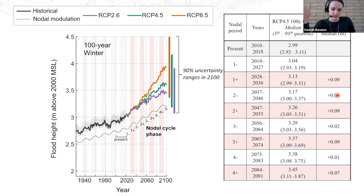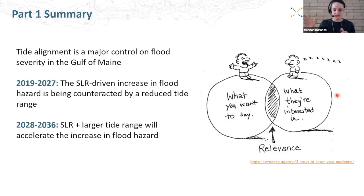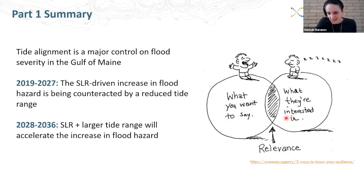To summarize: tidal alignment is a major control on flood severity in the Gulf of Maine. From 2019 to 2027 we're in the negative phase of the nodal cycle and the increase in flood hazard is being counteracted by a reduced tide range, but towards the end of this decade we're going to start to see a big uptick in flood hazard as the nodal cycle enters a positive phase and tides start to get larger. As I've come to GMRI, this is the piece of my previous work I've taken with me, and I've been getting a better sense of how I can leverage it to produce flood hazard information that's actually useful to flood hazard adaptation in the Gulf of Maine.